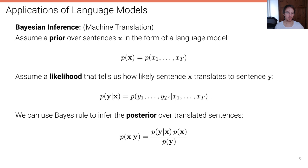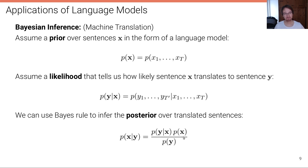Modern machine translation systems don't work like this. This approach is an example of a generative model being used to infer a discriminative decision rule. In modern machine translation systems, the probability of x given y is directly modeled — we directly model this distribution by conditioning on the source sentence and modeling a distribution for the output sentence. We're going to look at some examples of these types of models in the last unit.